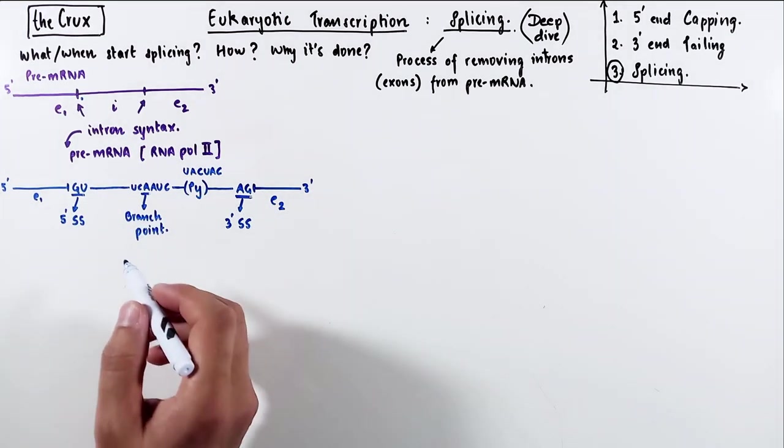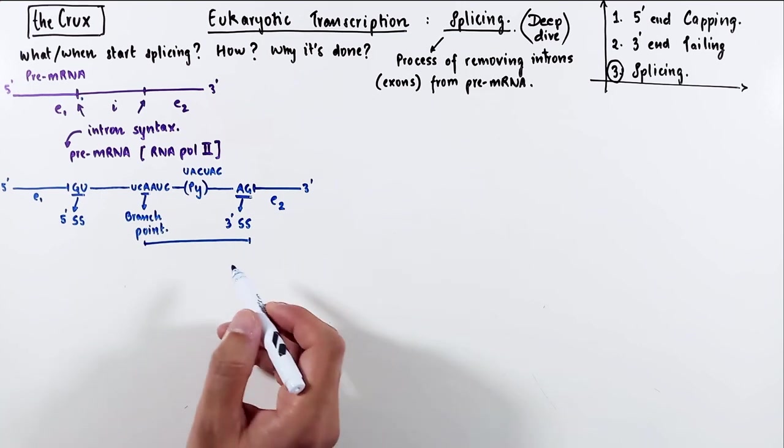This entire stretch of branch point, pyrimidine nucleotides, and 3' splice site occurs in the last 40 or so nucleotides of the intron.